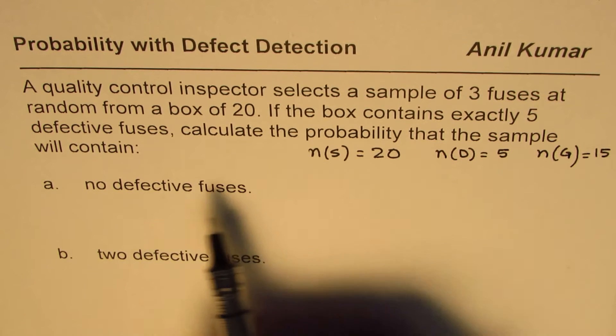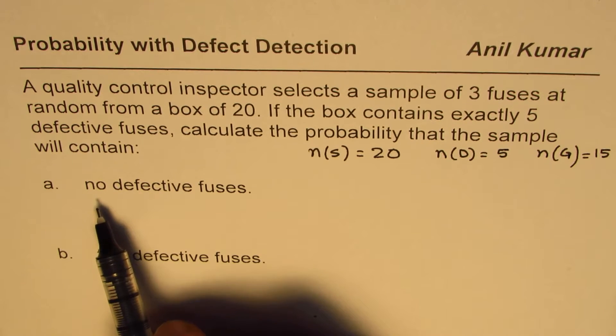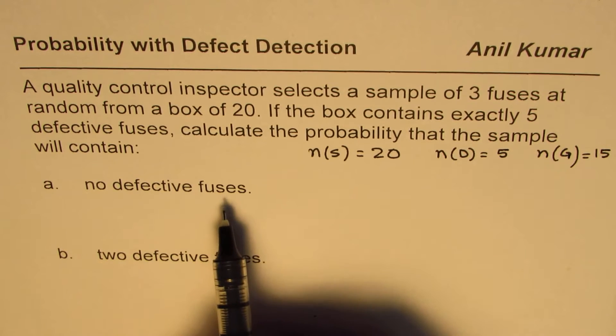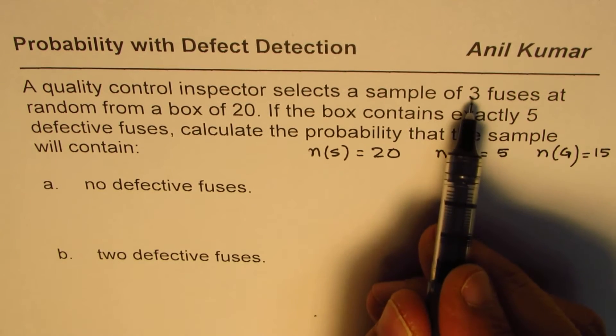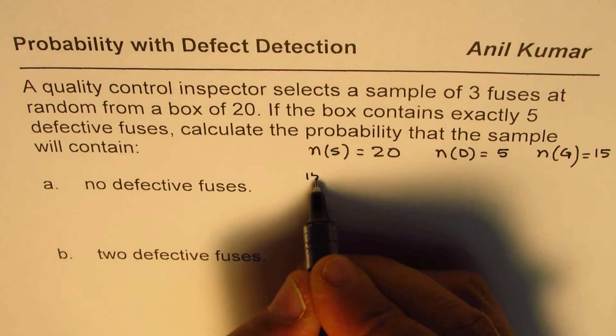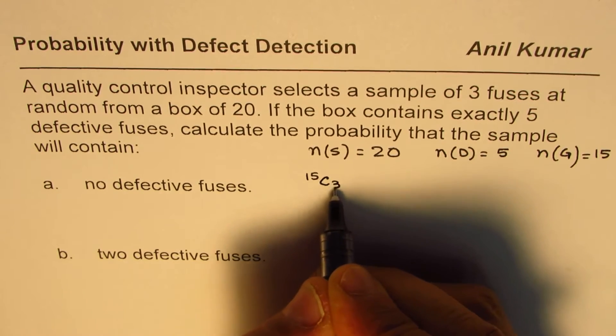Now what we are doing here is, we are saying we have to select no defective fuses. That means the selection is being done from these 15. And you are selecting three. So it could be written as 15C3. It's a combination. The order does not really matter.